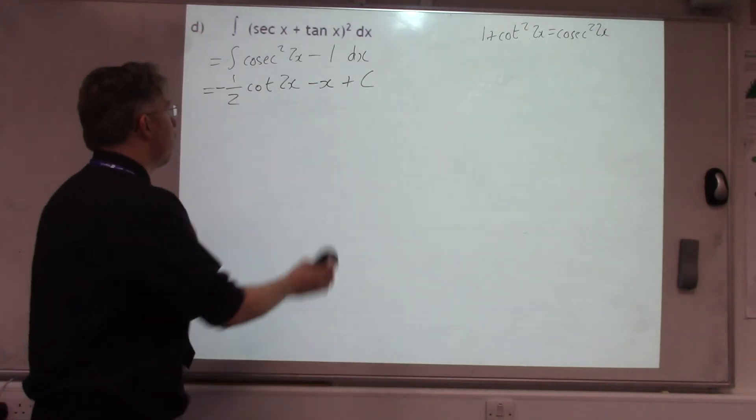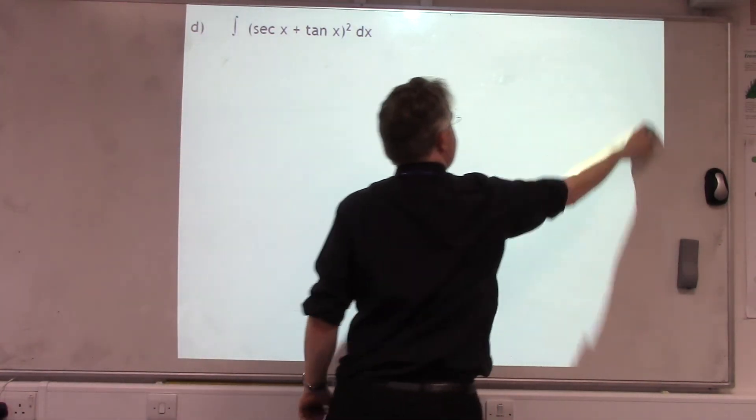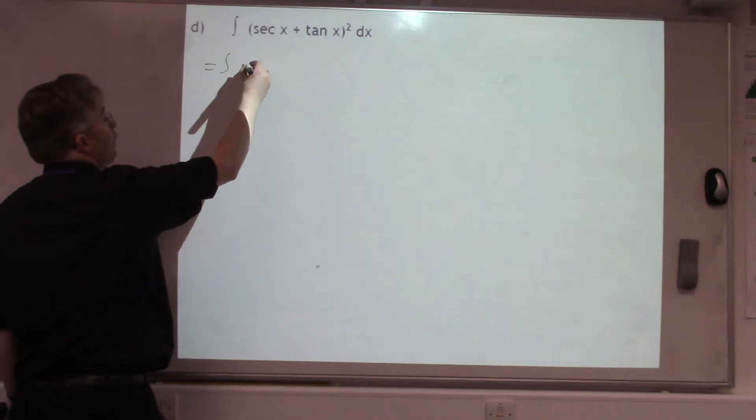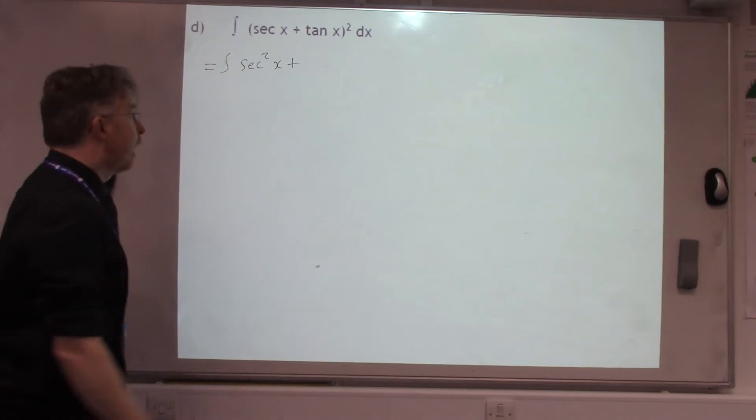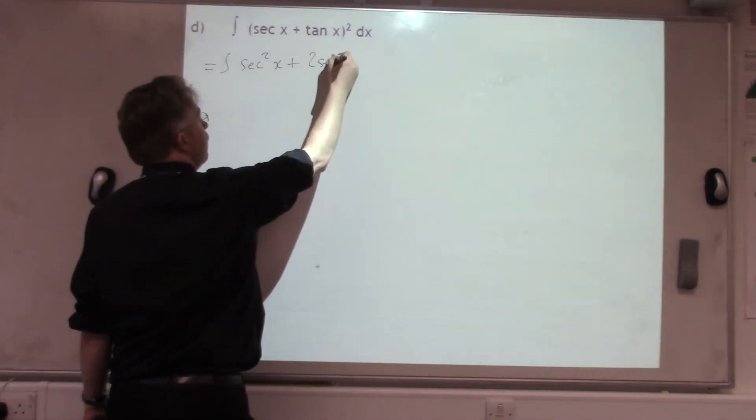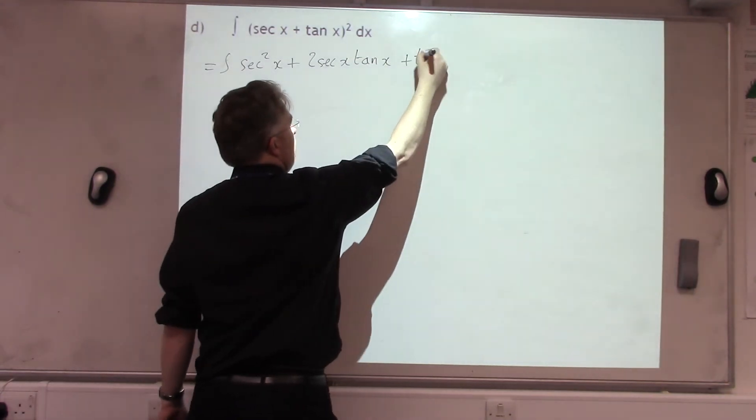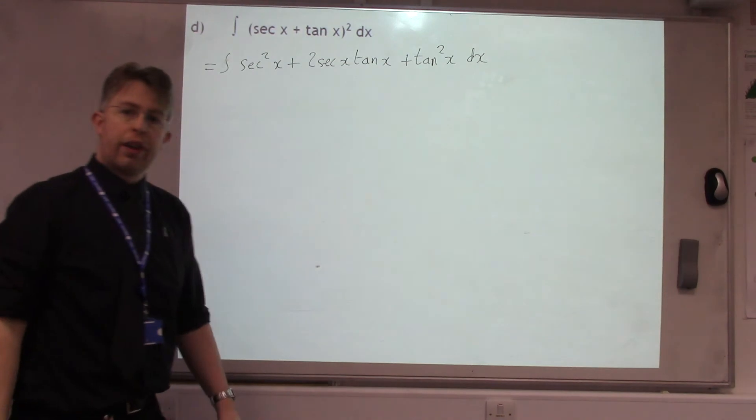Part D is unusual, but uses some of the work that we've already done. So, first we multiply out, and we get sec²x, plus 2 sec x, tan x, plus tan²x dx.